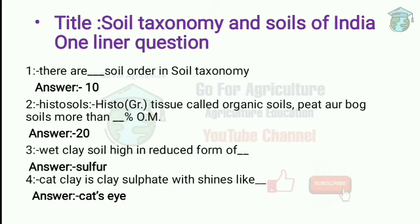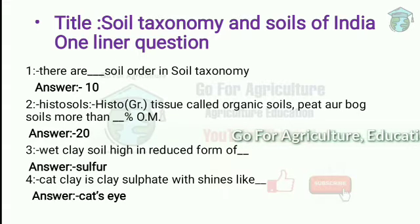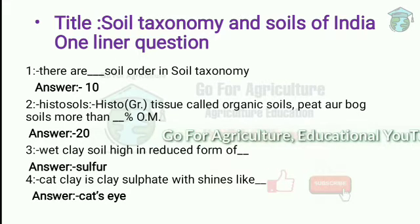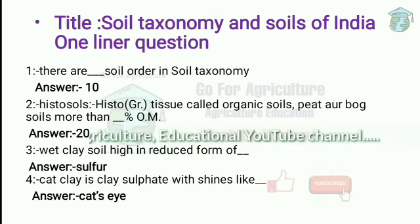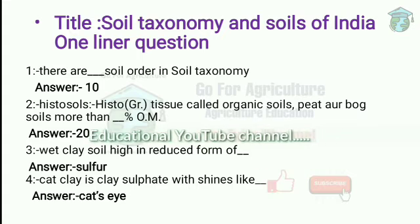First question: there are how many soil orders in soil taxonomy? That is 10. These are inceptisol, entisol, histosols, podosols, oxisol, vertisol, artisol, ultisol, mollisol and alfisols.